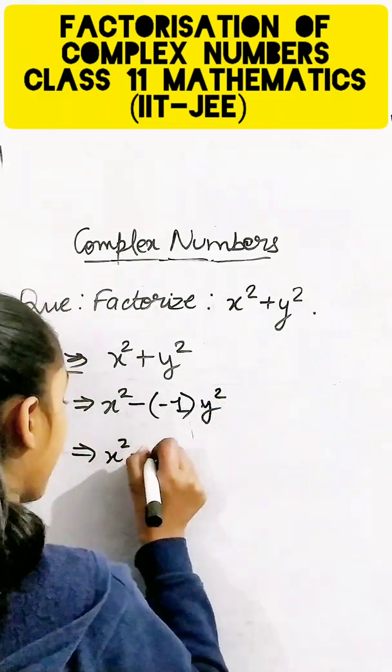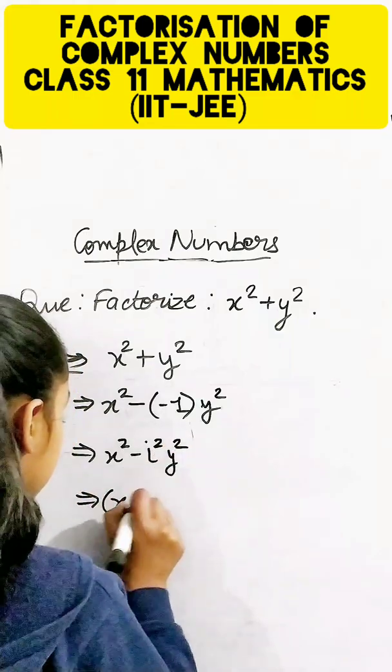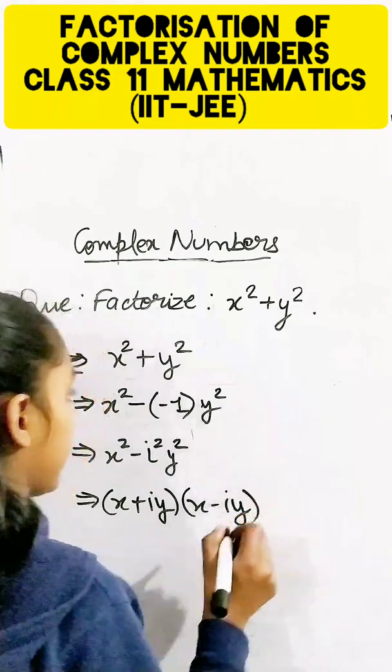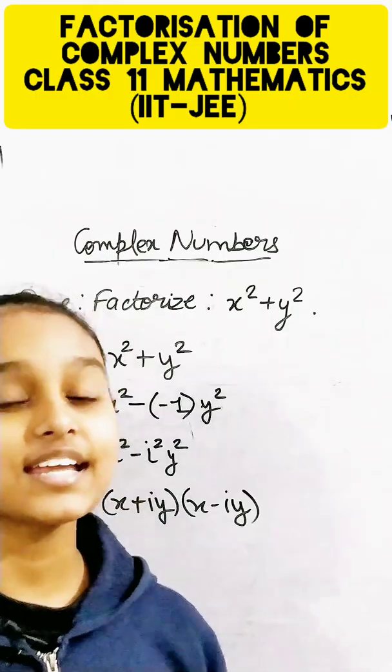Then it's going to be x² - i²y², which we can write in the form (x + iy)(x - iy). So the answer is (x + iy)(x - iy), that's it.